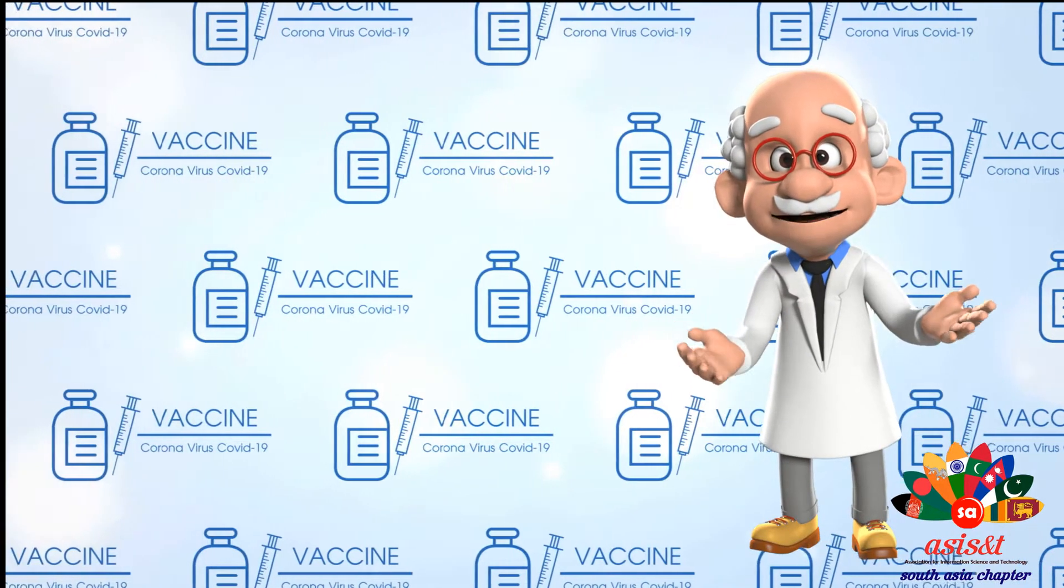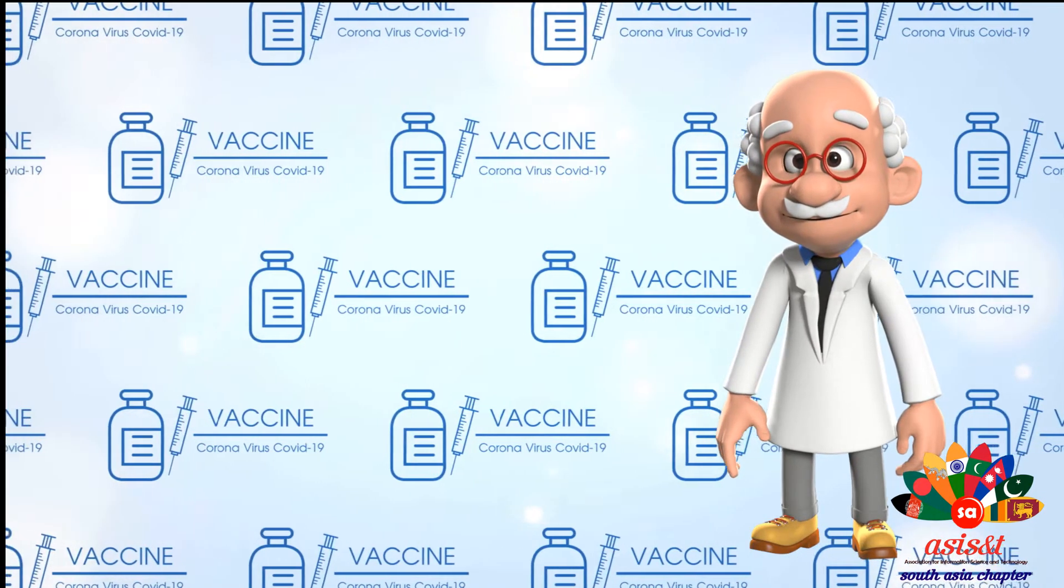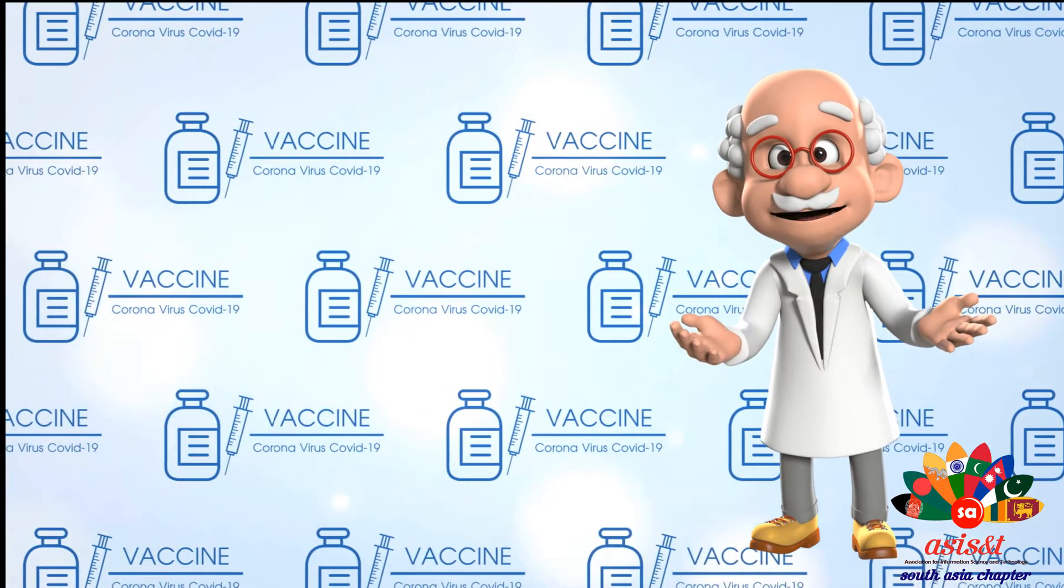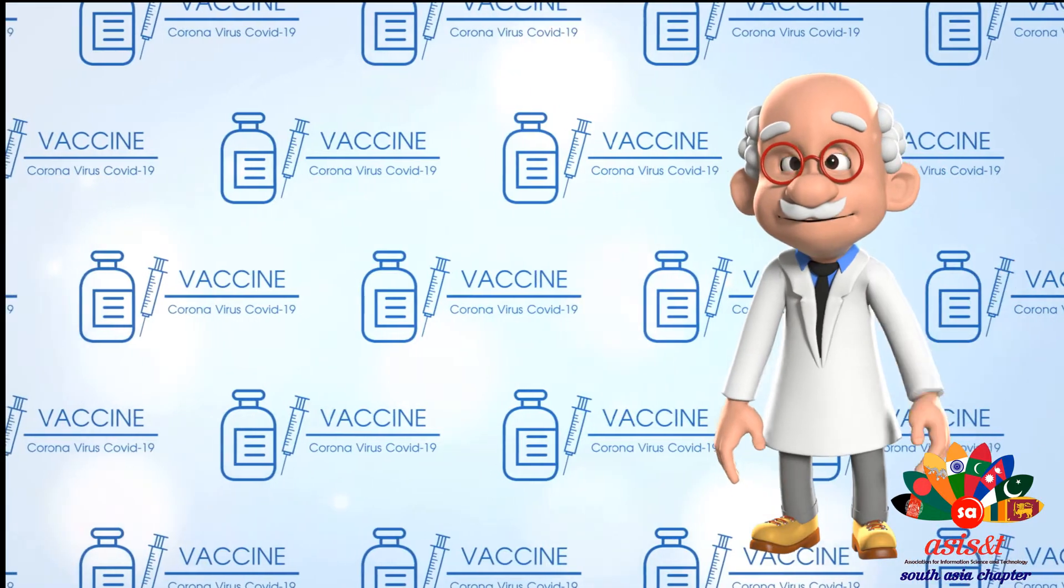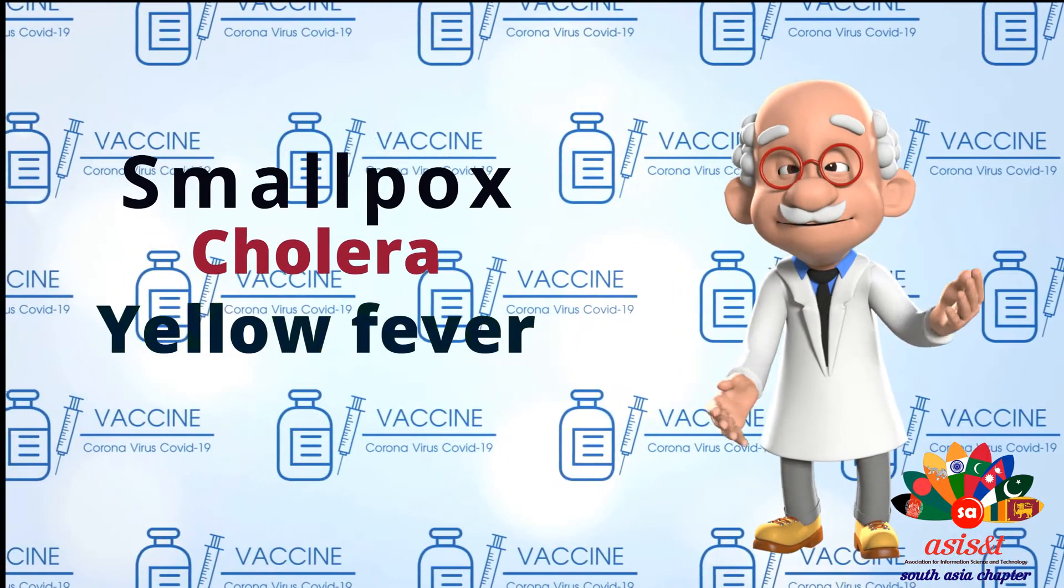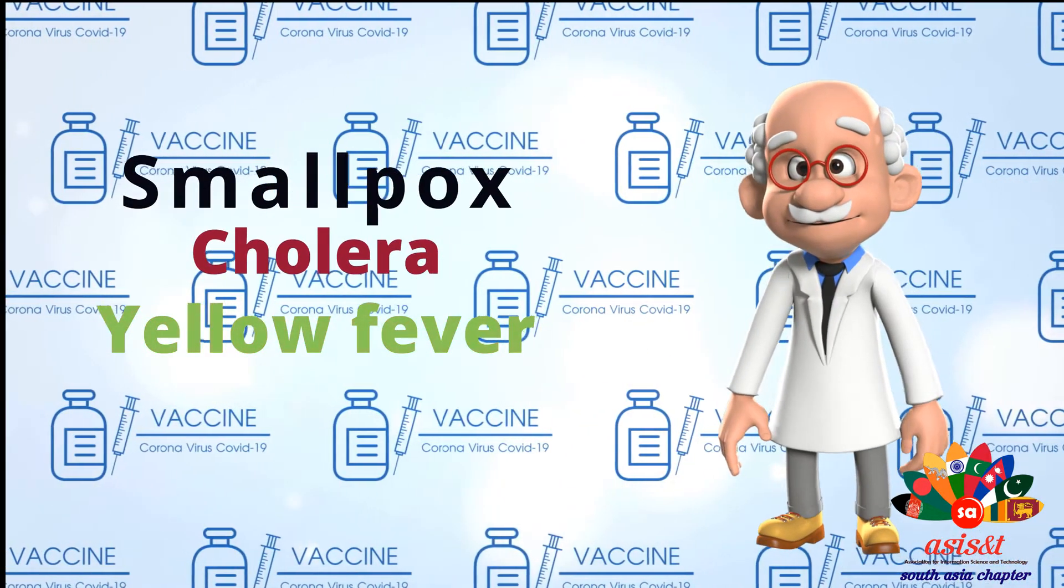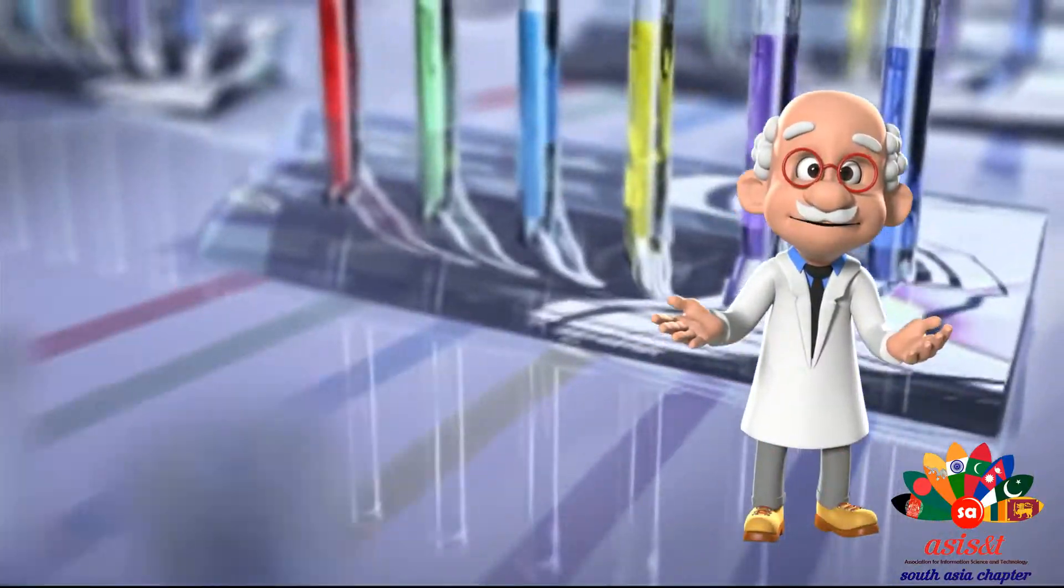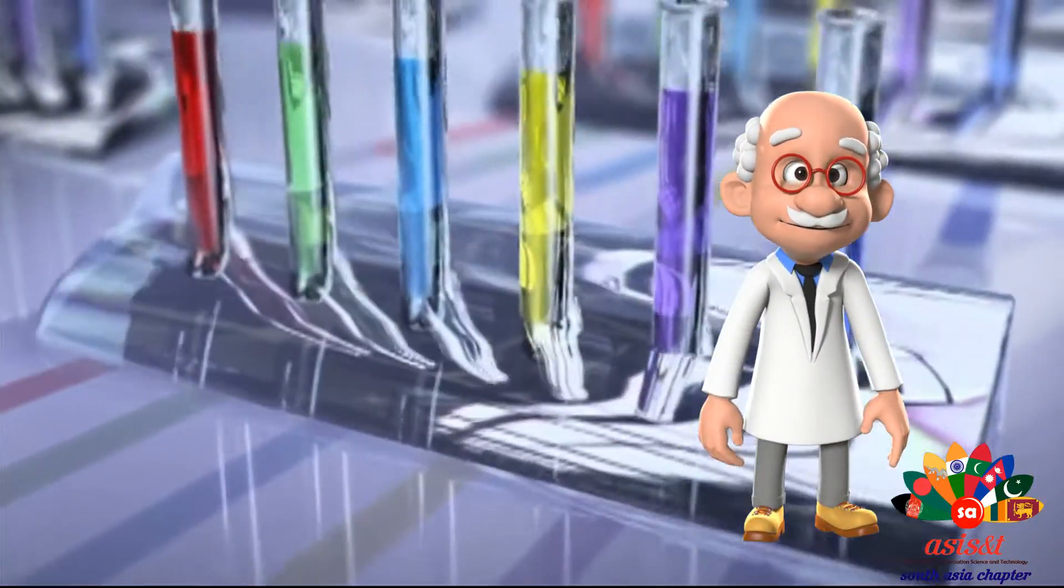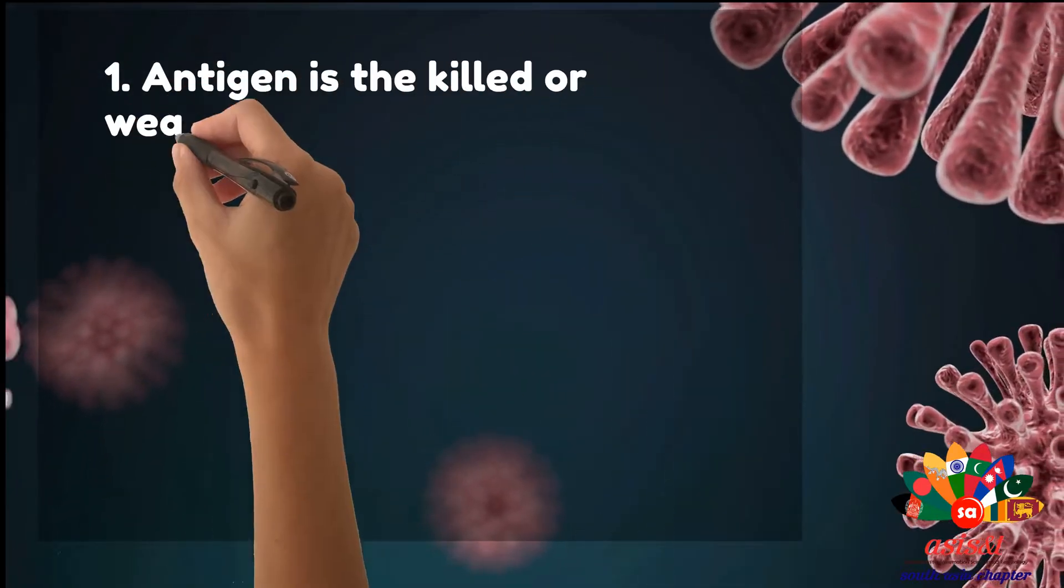Vaccines have been used to protect against many diseases. Recorded history depicts the fight against deadly diseases such as smallpox, cholera, and yellow fever, to name a few. The vaccine is made of four key components. Antigen is the killed or weakened virus or bacteria.